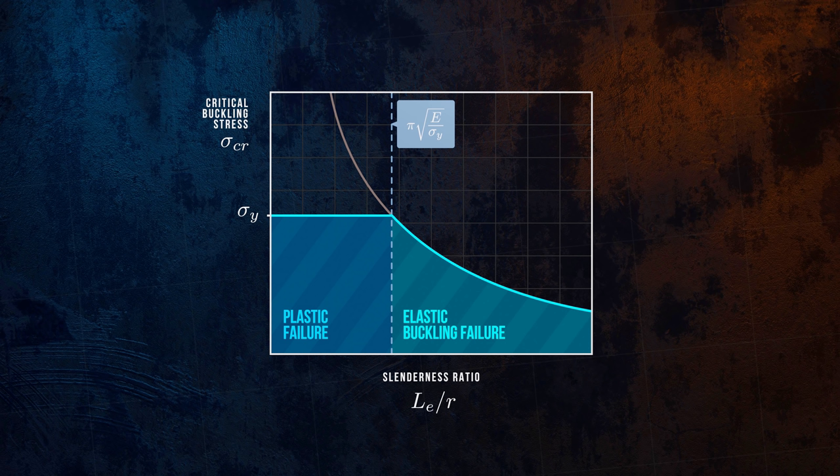The limiting slenderness ratio depends on the material Young's modulus and yield strength. For steel columns, the limiting slenderness ratio is around 90.